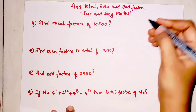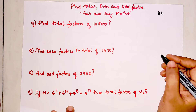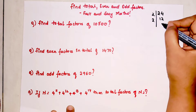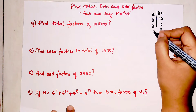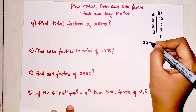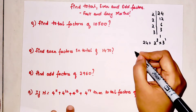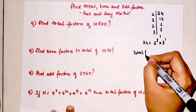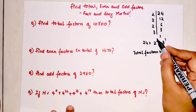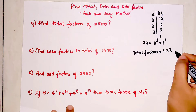Before beginning with big numbers, let's start with a smaller number. To find the total number of factors for 24, do the prime factorization: 24 = 2 × 12 = 2 × 2 × 6 = 2 × 2 × 2 × 3, so 24 = 2³ × 3¹. To find the total number of factors, raise each index by 1: (3+1) × (1+1) = 4 × 2 = 8.